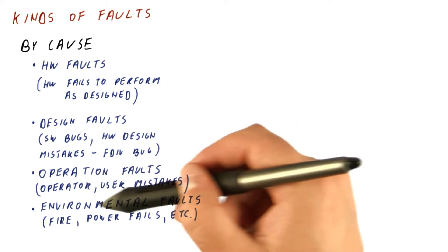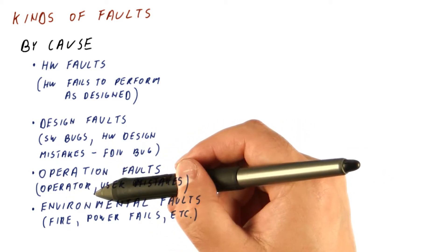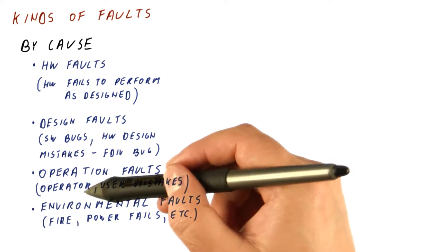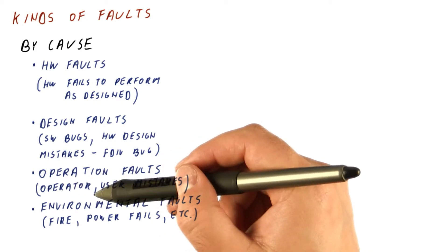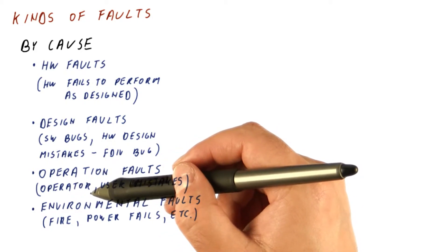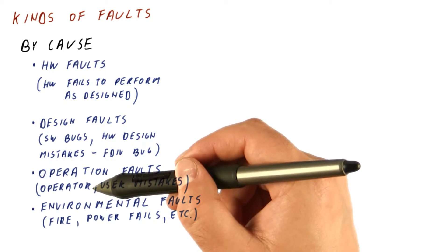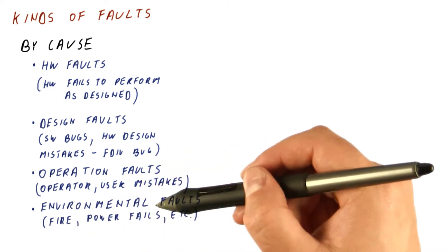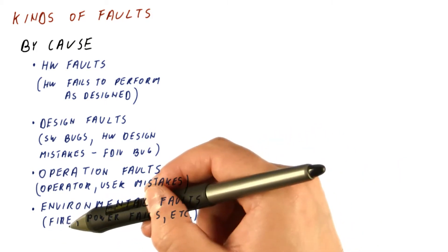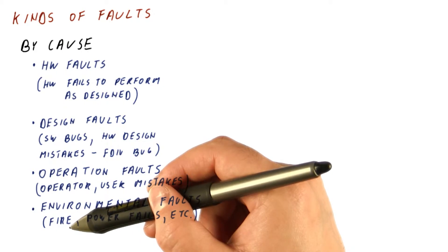Operator faults may not cause the system to actually have an error. For example, if you shut down the system but at this time nobody's trying to use it to get service from it, it might not be an actual failure. And then we can have a fire, but if we protected our system from fire, a fire in the system room may not actually result in an error. For example, we can have a switch over to another system.